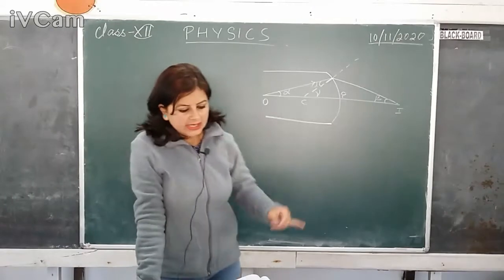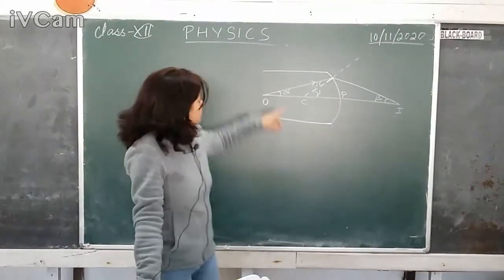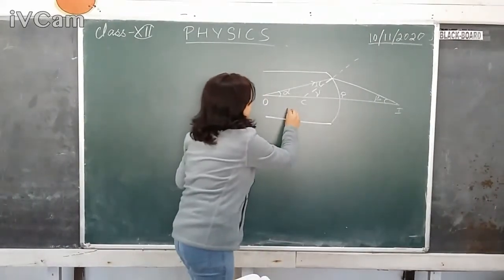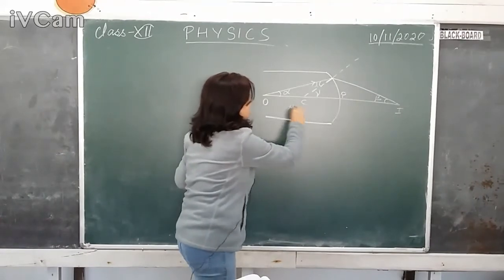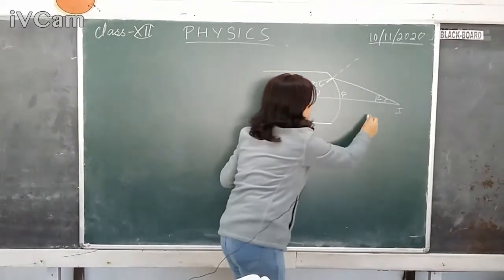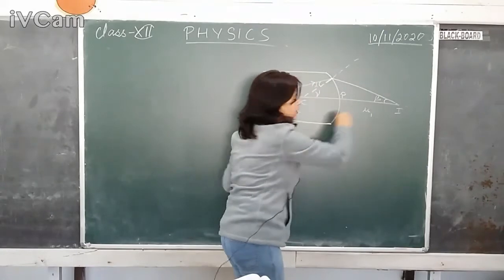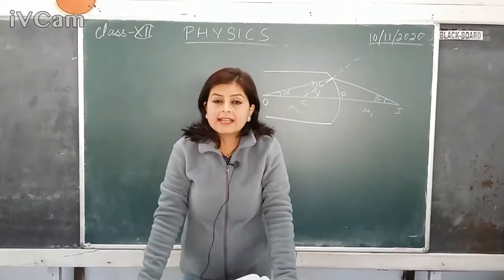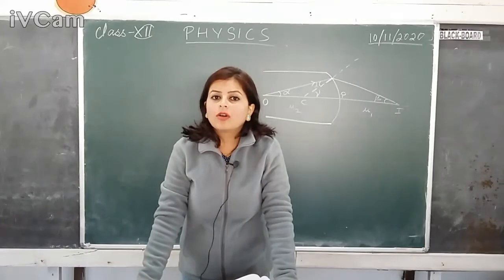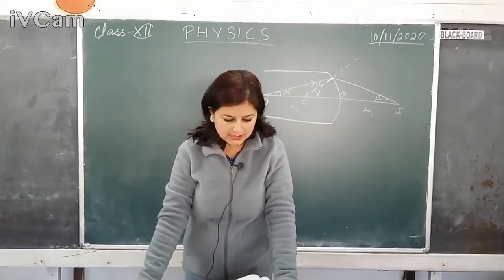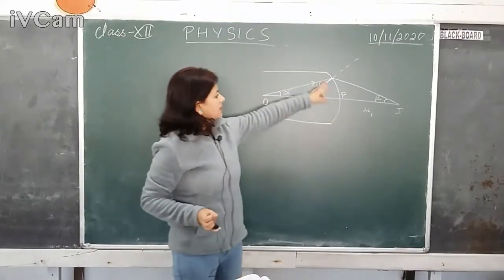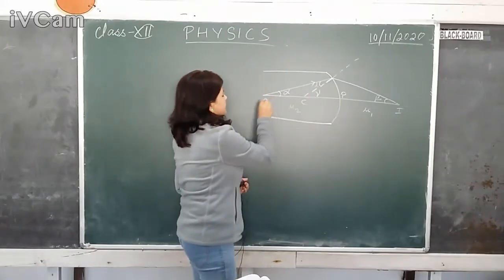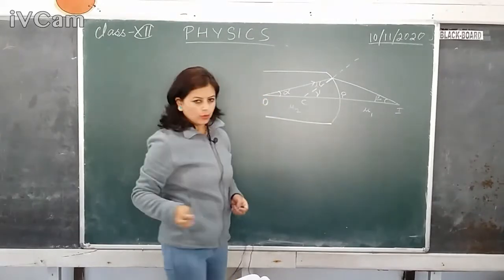First, we will be taking refraction from a denser medium of refractive index mu2 to a rarer medium of refractive index mu1, at a spherical convex refracting surface. We have taken this refracting surface with a point object on the principal axis. The name of the object is O.